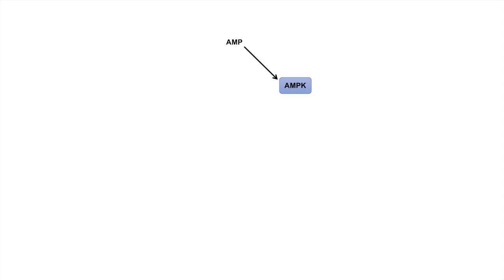There are several things that actually activate AMPK. The first is AMP itself, which is an activator of AMPK. Another protein known as LKB1 — or liver kinase B1 — also activates AMPK. And another interesting activator of AMPK is exercise. Exercise is actually an activator of AMPK.